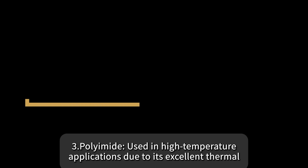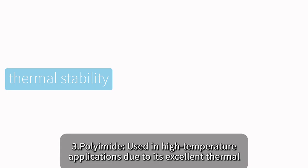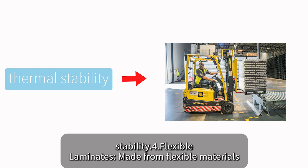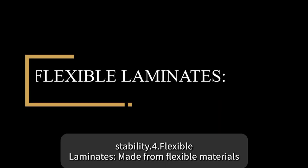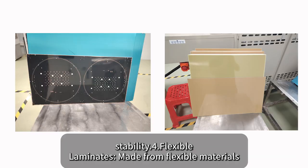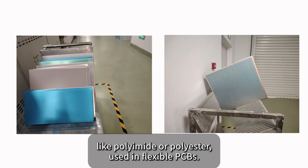3. Polyamide: used in high-temperature applications due to its excellent thermal stability. 4. Flexible laminates: made from flexible materials like polyamide or polyester, used in flexible PCBs.